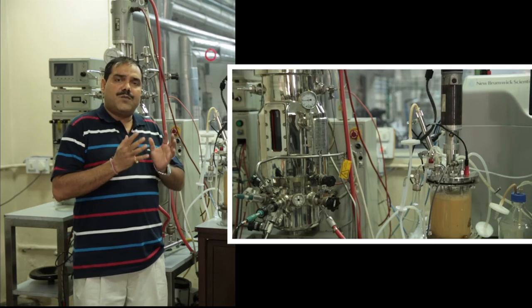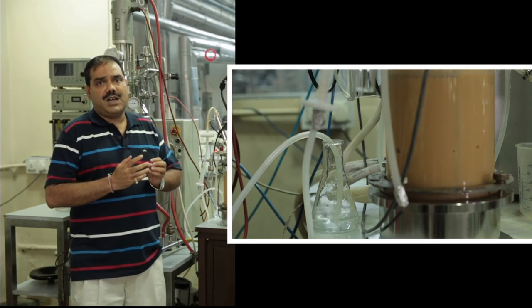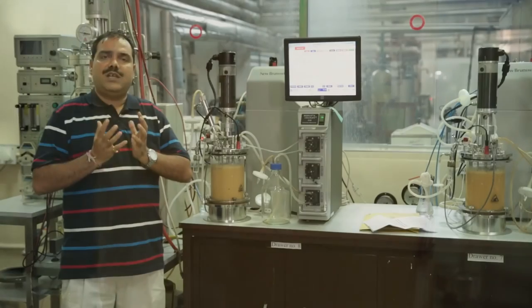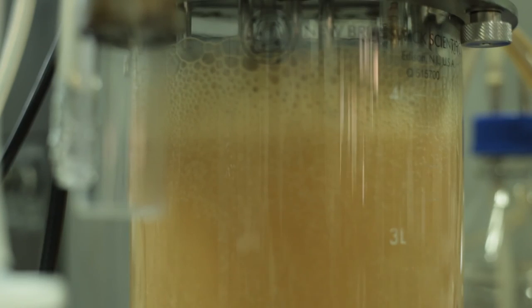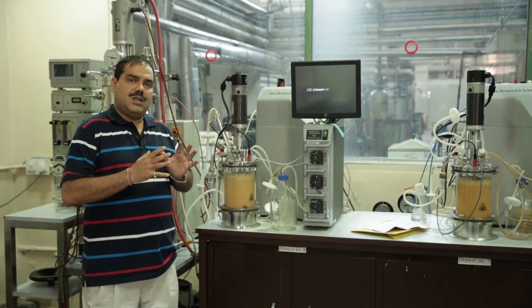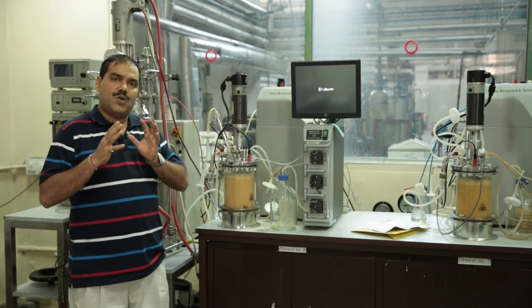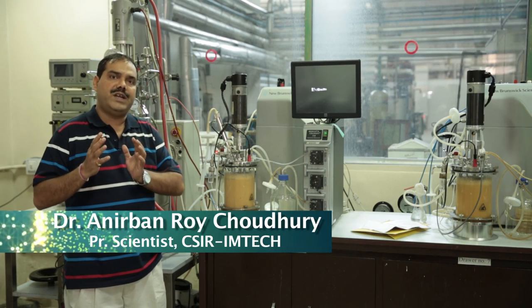More importantly, our process talks about production of pullulan by using agri-industrial waste. Actually, we are calling this process for creating wealth from waste which are actually very low-cost raw material. And our process is totally indigenous. The organism is from India and the whole process has been designed and created in India. So it goes very well along with the mandate of government of India which says make in India.